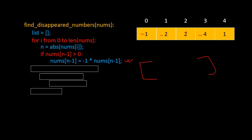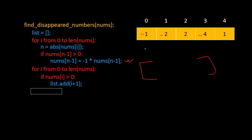Now we find the disappeared integers. We have two positive integers remaining, meaning two elements disappeared. We add one to the index of each positive integer: two plus one is three, and four plus one is five. In the second loop, for minus one — condition is false. For minus two — false. For positive two: two plus one equals three, added to the answer list. For minus four — false. For positive four: four plus one equals five, added to the answer list. This is our answer list, which we return.